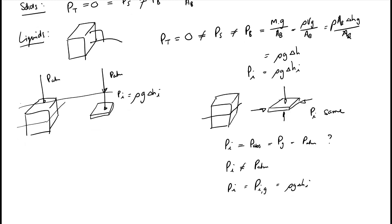I could also get the absolute pressure at point i by adding the atmospheric pressure: P_abs = ρgΔh + P_atm. So P_i can be either gauge pressure or absolute pressure depending on whether we add the atmospheric pressure or not. If we just calculate ρgΔh it is the gauge pressure; if we add the atmospheric pressure it is the absolute pressure. I hope you enjoyed this lesson.